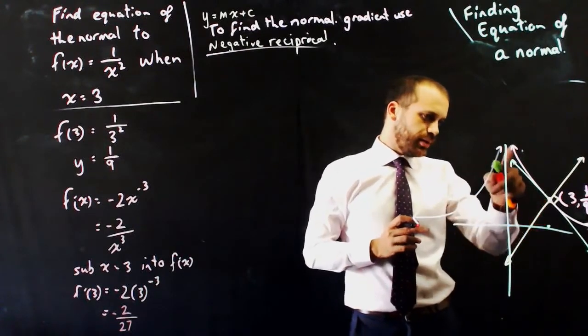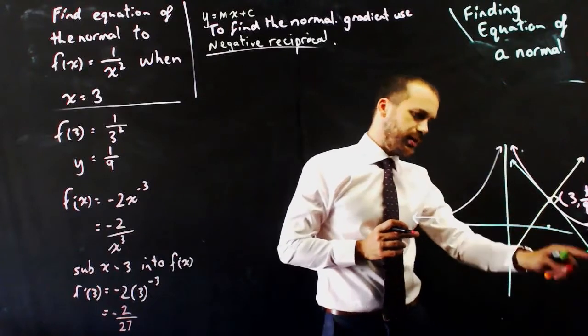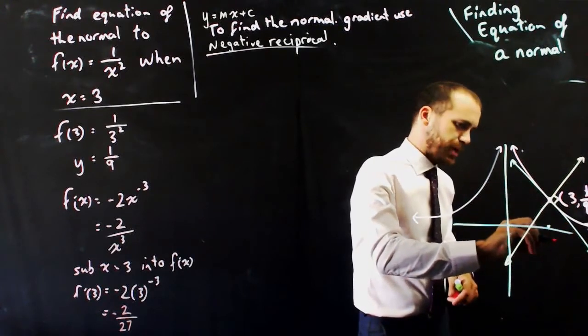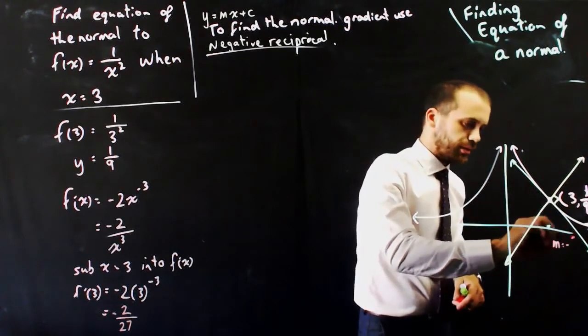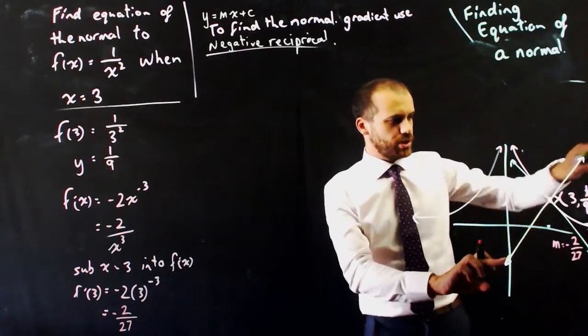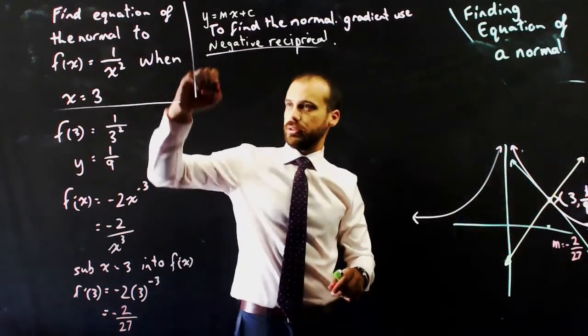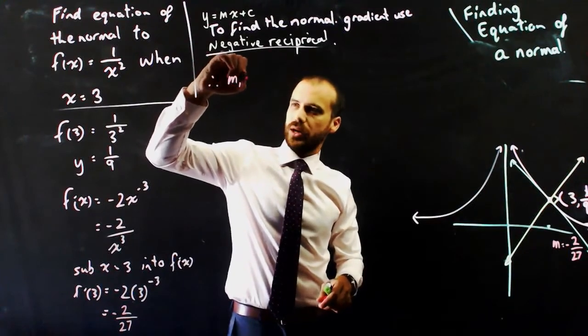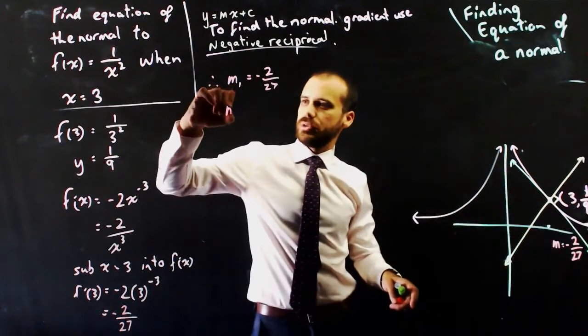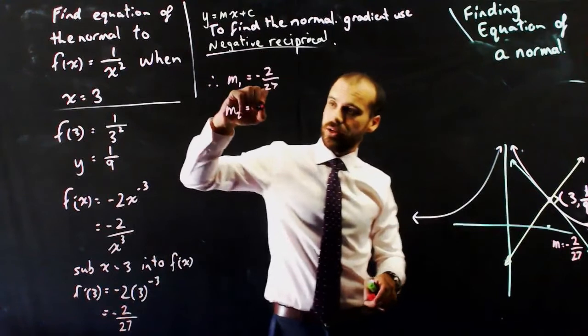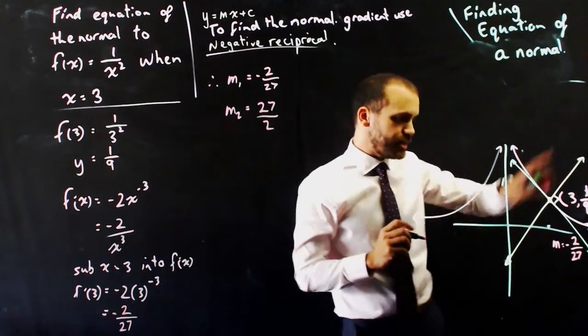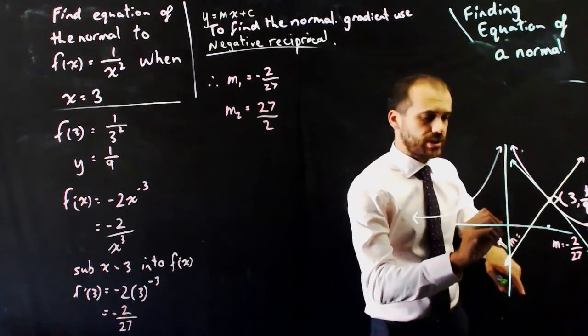I know that this line, or this green line here, has a gradient of - oops, I'm going off this page here - m equals negative two on 27. That's for the equation of the tangent, but I need the equation of the normal. So therefore, if m₁ equals negative two on 27, then m₂ will be equal to the negative reciprocal of that, which would be positive 27 on 2. So now I know that the gradient of my normal is 27 on 2.